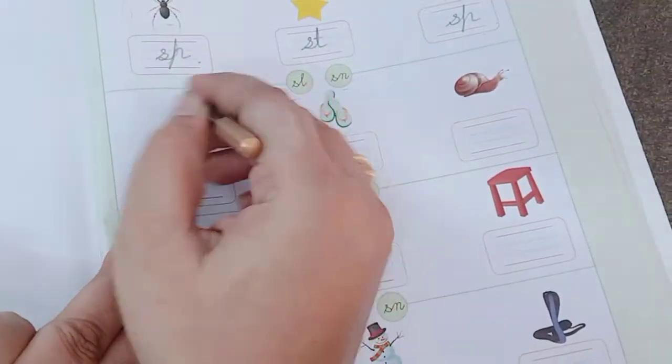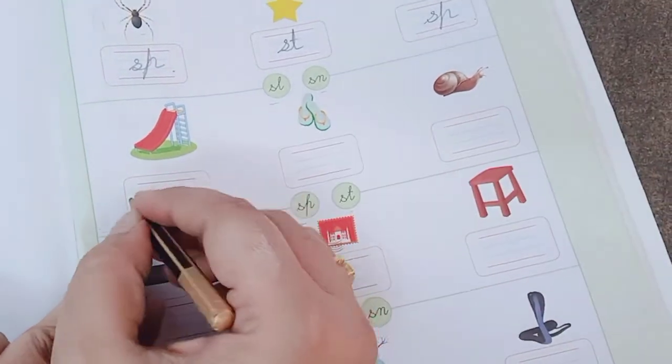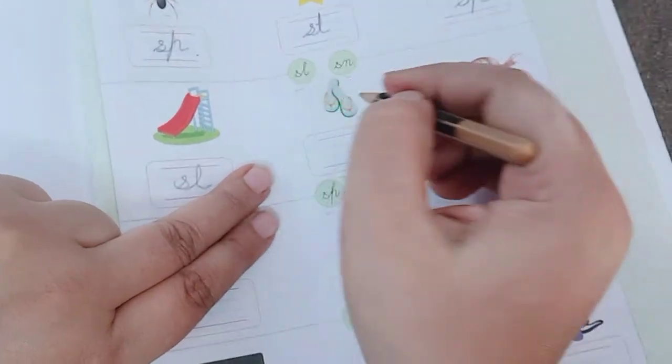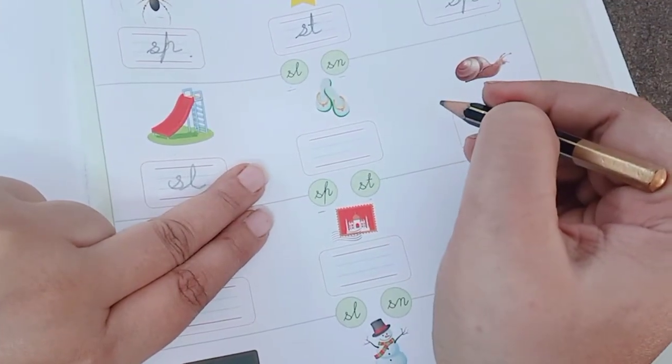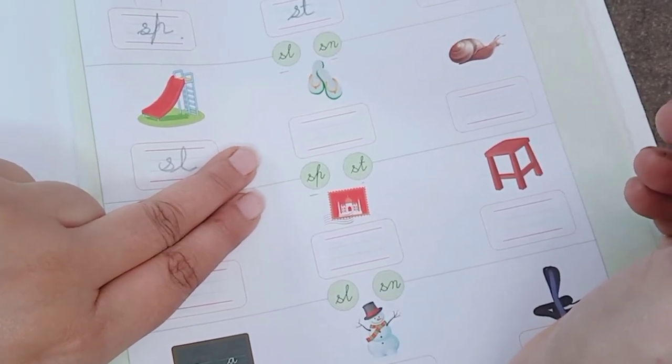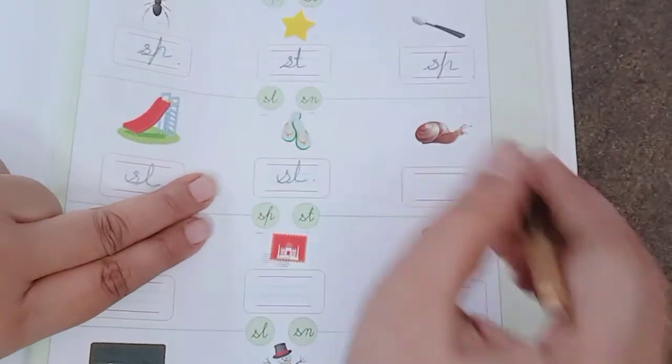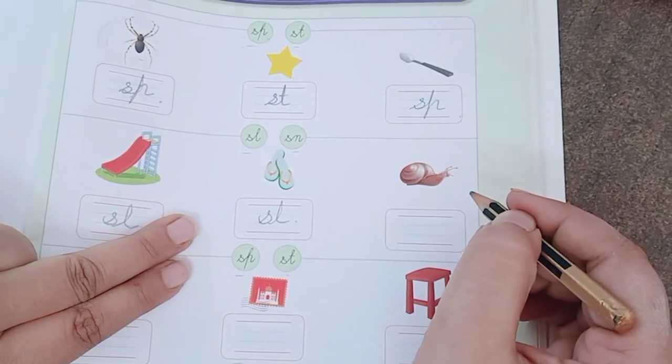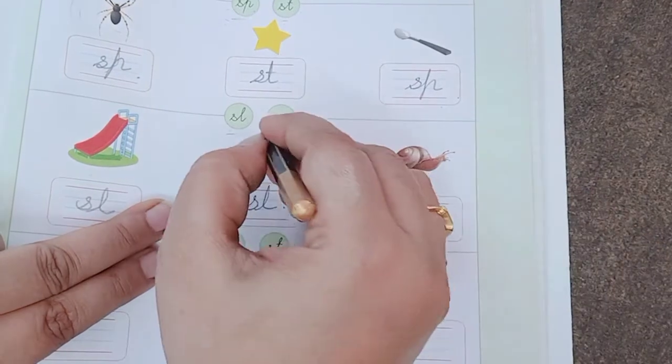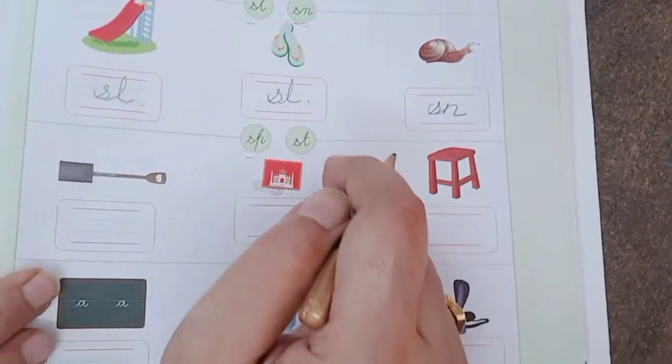Now, this is a picture of slide. SL, SL means S and L. It is slip, SL, initial sound is SL. So we will use SL. It's a picture of snail, SN. Which sound are you hearing? S and N. So we'll use SN. Again, SP, ST.